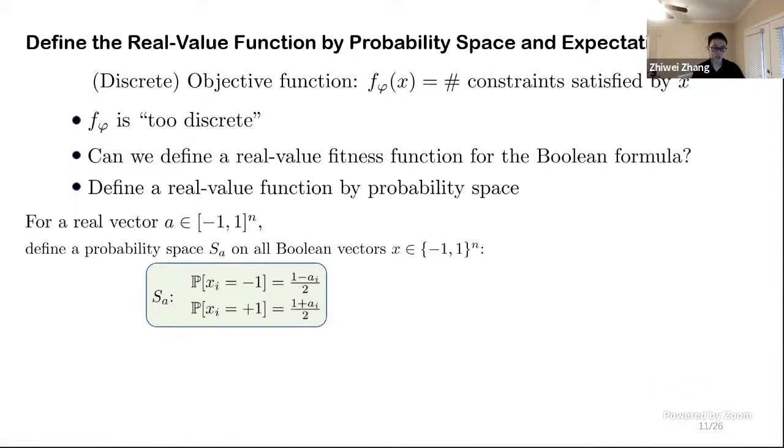Here is how we do it. Each coordinate of the Boolean vector will be independent from each other, and the value of Xi will only be related with the value of Ai. So roughly speaking, if Ai is positive, then Xi has a greater chance of being one if sampled from the probability space SA. And if Ai is negative, then vice versa. Here is an example.